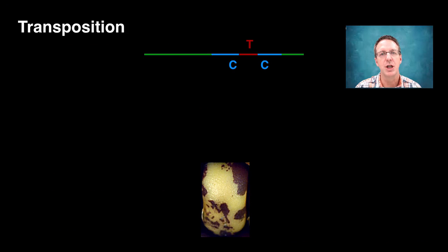If we imagine a gene that codes for the purple color of kernels, shown here in blue, but this gene is interrupted by a transposon shown in red, this is, in effect, it's an insertion mutation that knocks out the gene and prevents the color from being made, giving rise to colorless regions of the kernel.